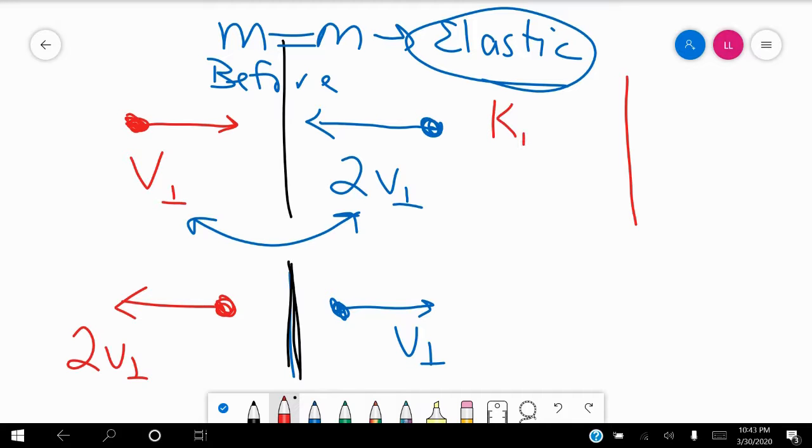so the kinetic energy of substance one, we just do our one-half mV squared, which means the kinetic energy before is just simply one-half mV perpendicular squared.